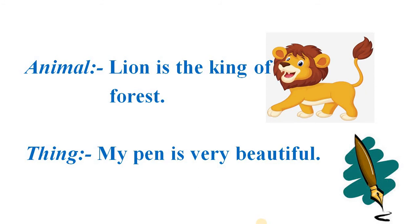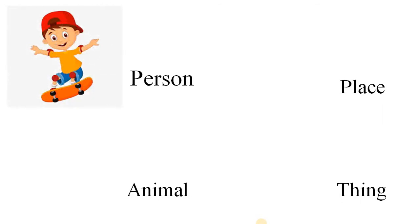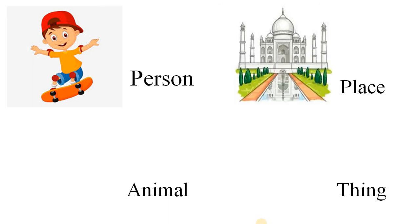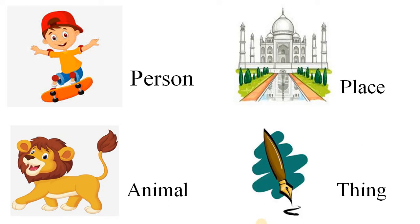You saw, students, we used each subject one by one and used 'is' with all of them. Rahul is only one person, so we use 'is'. Taj Mahal is a monument, so we used 'is'. Lion — we are talking about only one lion, so we use 'is'. Pen is also only one, so we used 'is'.